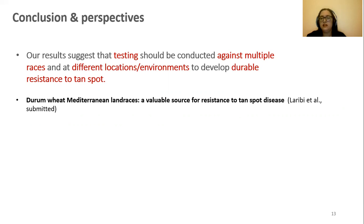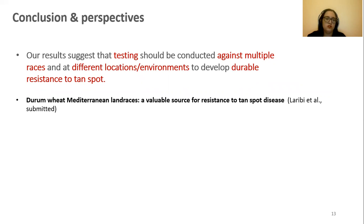In this context, a study on resistance to tan spot disease among a Mediterranean collection of einkorn wheat accessions was conducted under field conditions in Tunisia, and this work concluded with the submission of a paper entitled 'Einkorn Mediterranean Landraces are Valuable Sources for Resistance to Tan Spot Disease.'